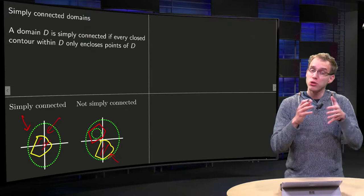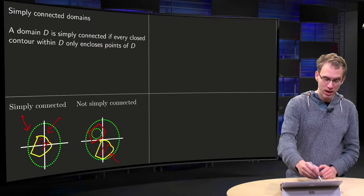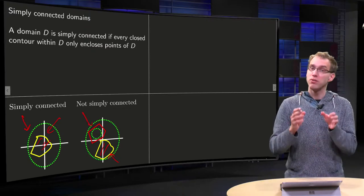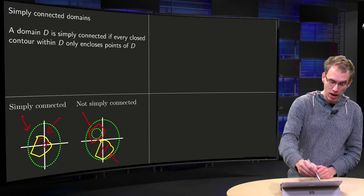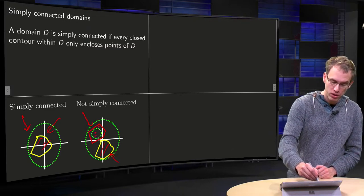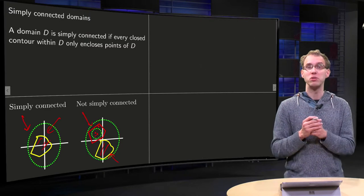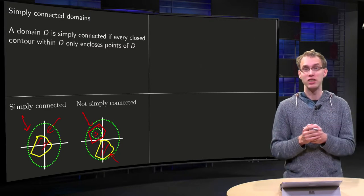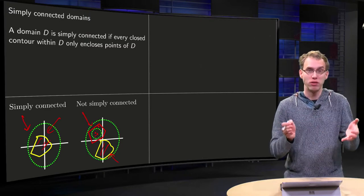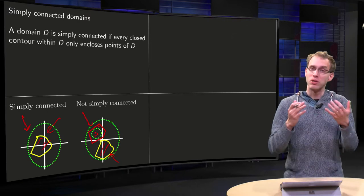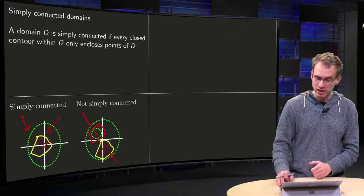However, we can also draw another contour, the red one over there. And you see, if you look inside the red one, there are a few points of D, but there are also points that do not belong to D, which means that the second region is not simply connected. Well, you see it of course already, it has a hole. So that's why it's not simply connected.